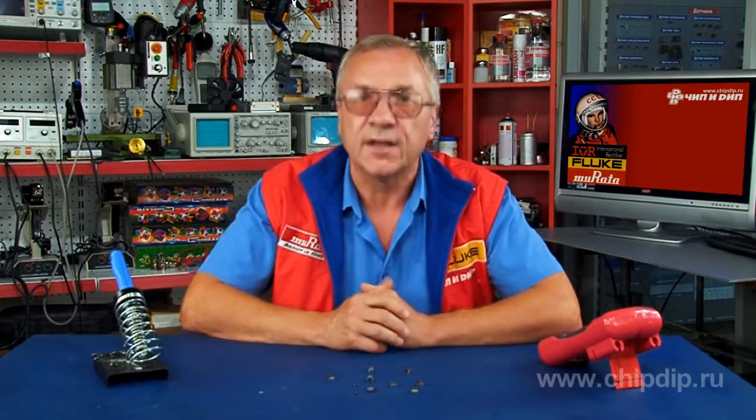If we view the address inputs of ROM chips as combinational circuit inputs and the data bits as outputs of this combinational circuit, we can develop any desired truth table for a given combinational circuit. All we need to do is draw up a ROM firmware table that would correspond to the desired truth table.